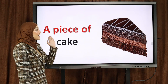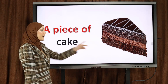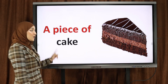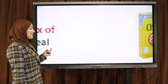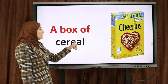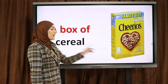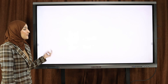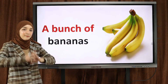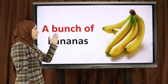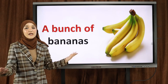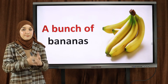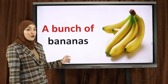A piece of cake — قطعة من الكاك. A piece of chocolate cake — because it's my favorite, it's everyone's favorite! A box of cereal — صندوق من السيريال. A bunch of bananas — مجموعة من الموز. A bunch of grapes — مجموعة من العنب. A bunch of means مجموعة من.